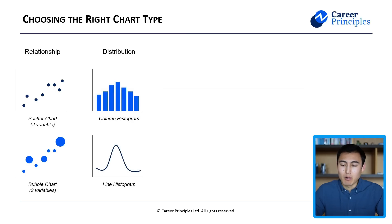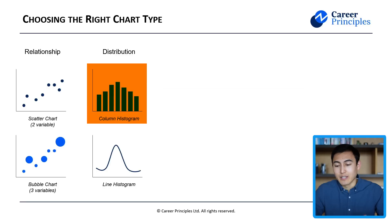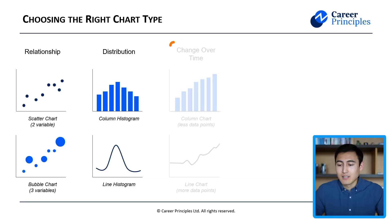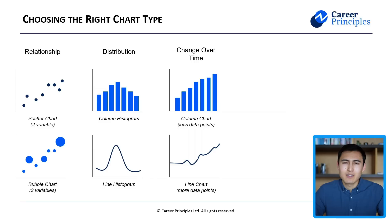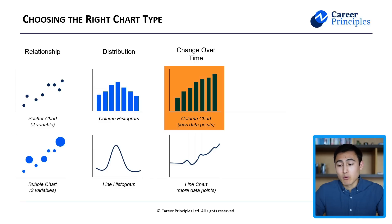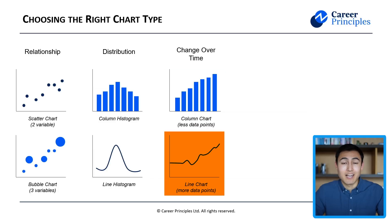If you want to show how data is distributed, then a histogram is probably the way to go — you can do it either in column format or in line format. For showing changes over time, like a trend, typically people go with a column chart when you have fewer data points, while they might prefer a line chart when you have more.